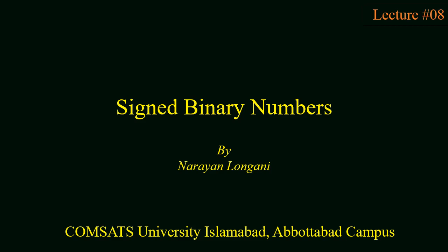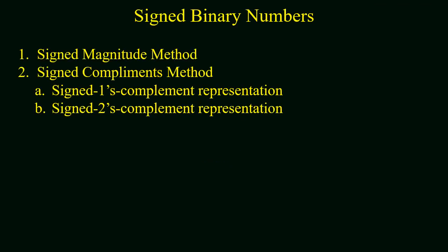Hello everyone, and welcome back to the series of digital logic design. Today we will study signed binary numbers. This method is used to represent a binary number in a positive or negative form. A binary number can be represented in a positive or negative form with the help of two methods: the first one is the sign magnitude method, and the second one is the sign complement method. The sign complement method is further divided into sign one's complement and sign two's complement representation.